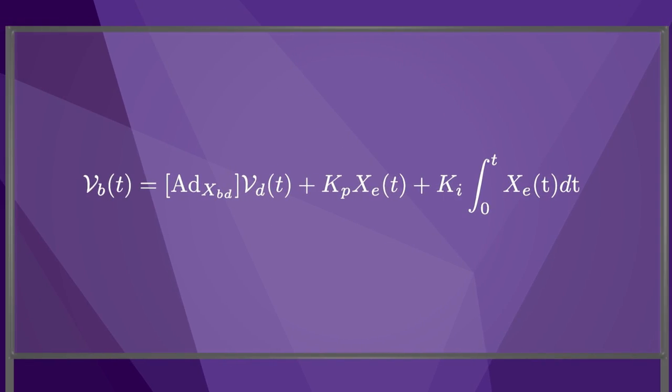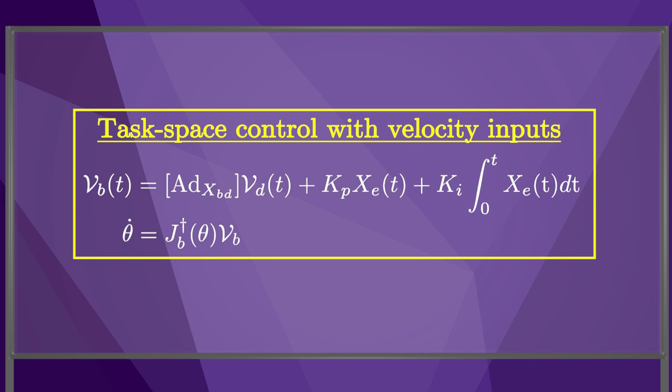The final controller can be written like this, a task space feedforward plus PI feedback control with velocity inputs. The actual joint velocities are calculated using the Jacobian inverse or pseudo-inverse.